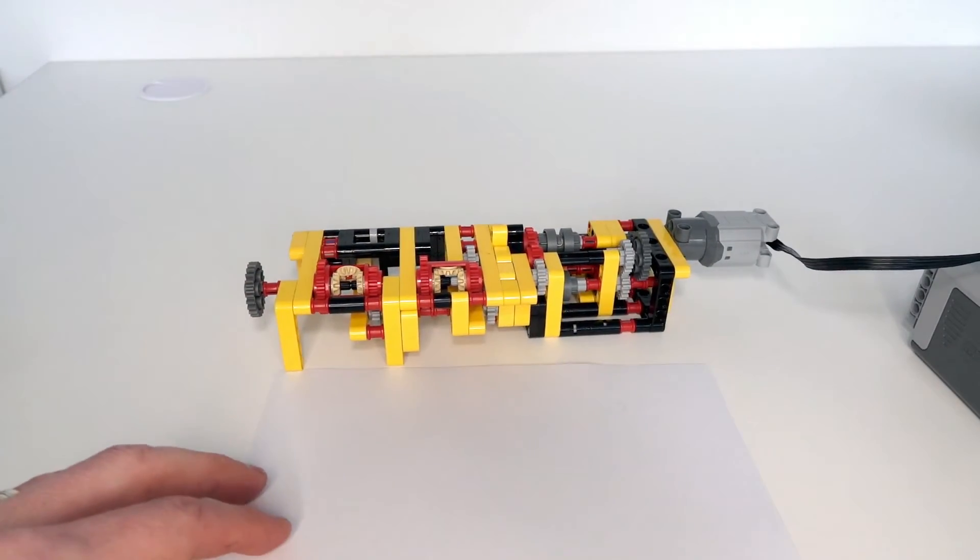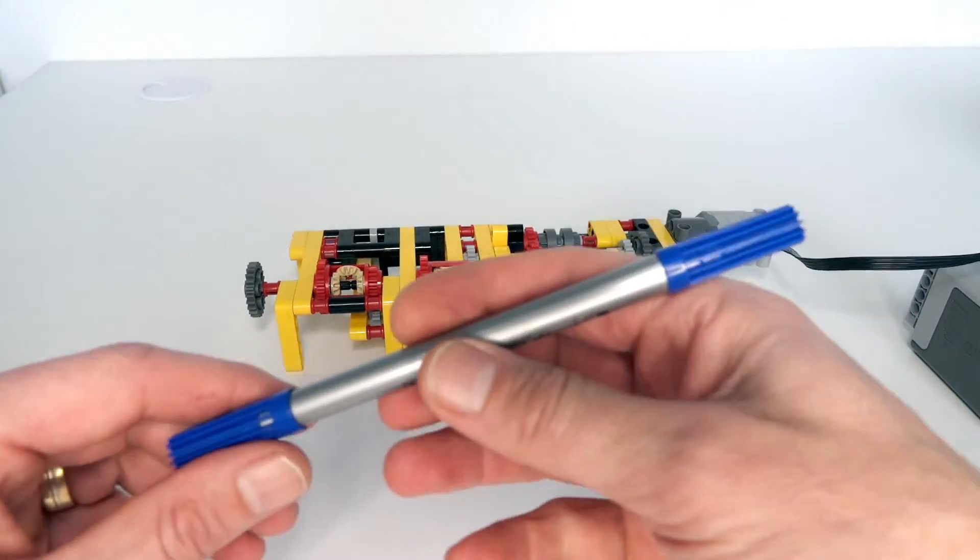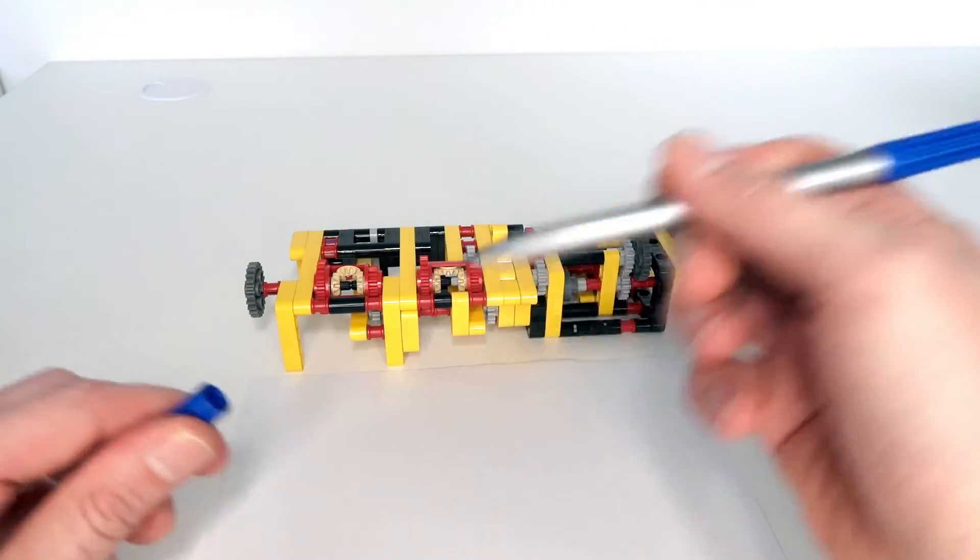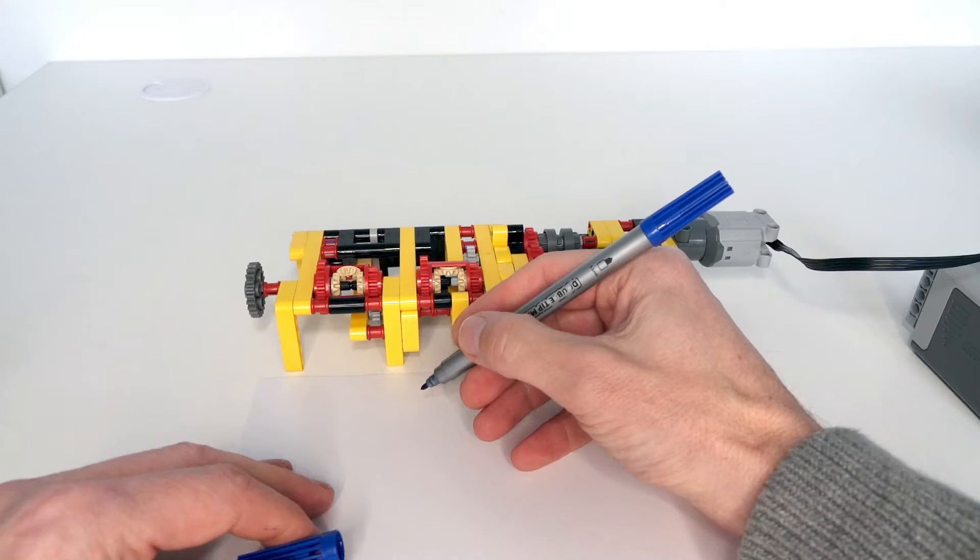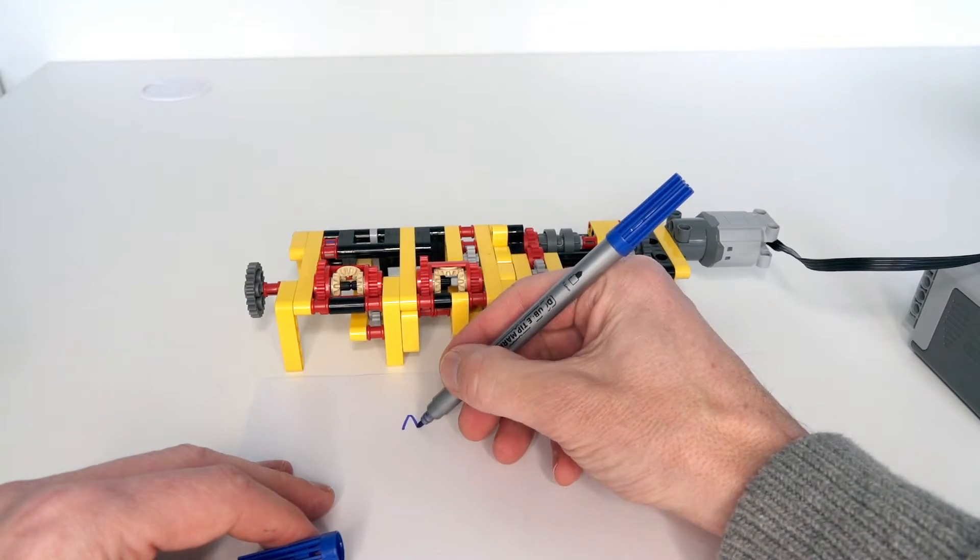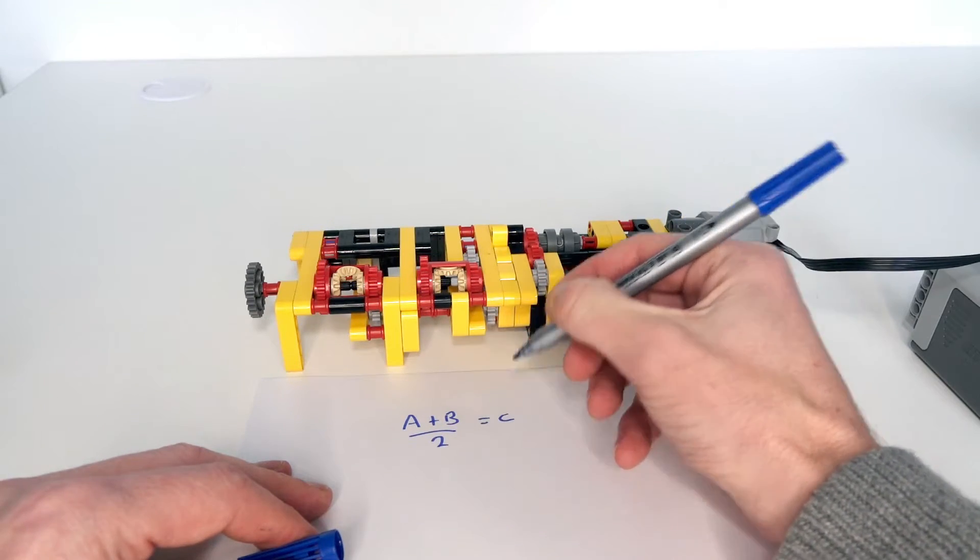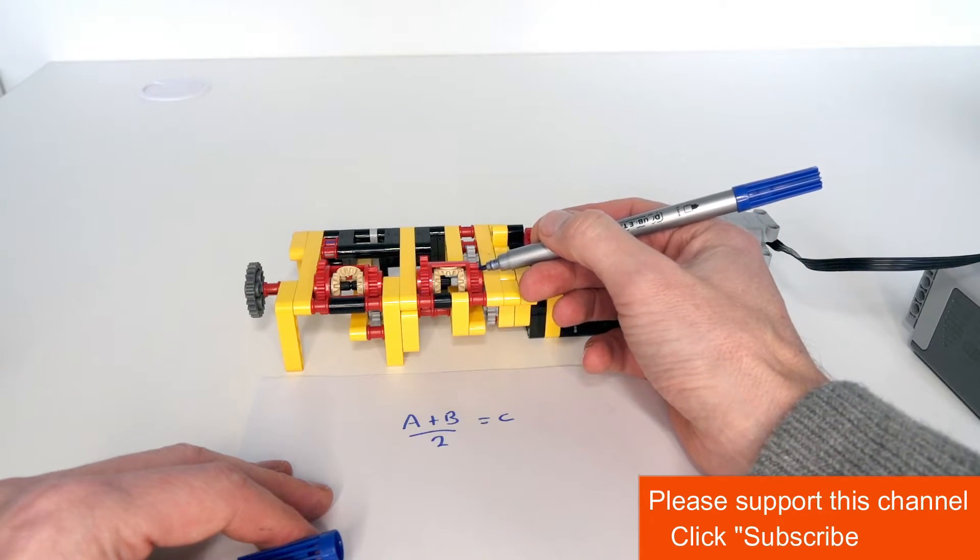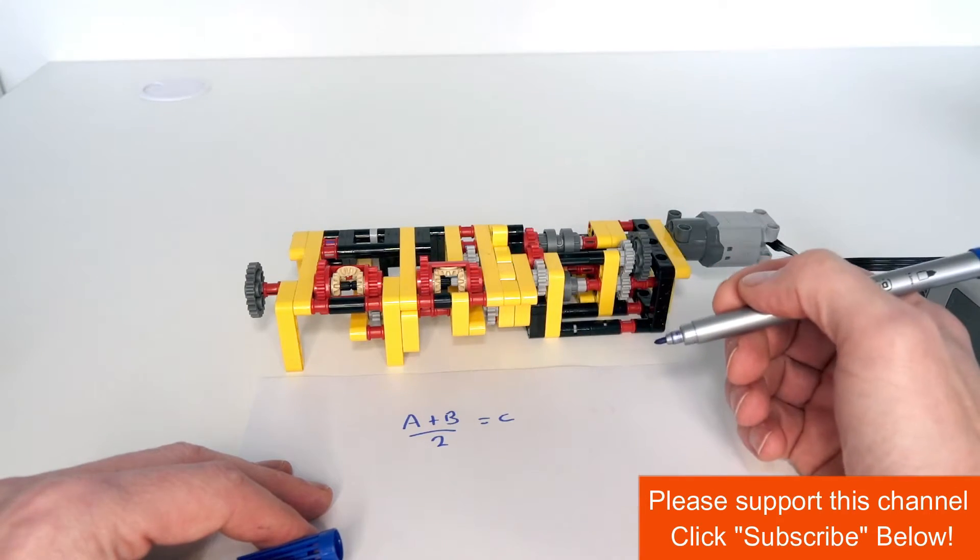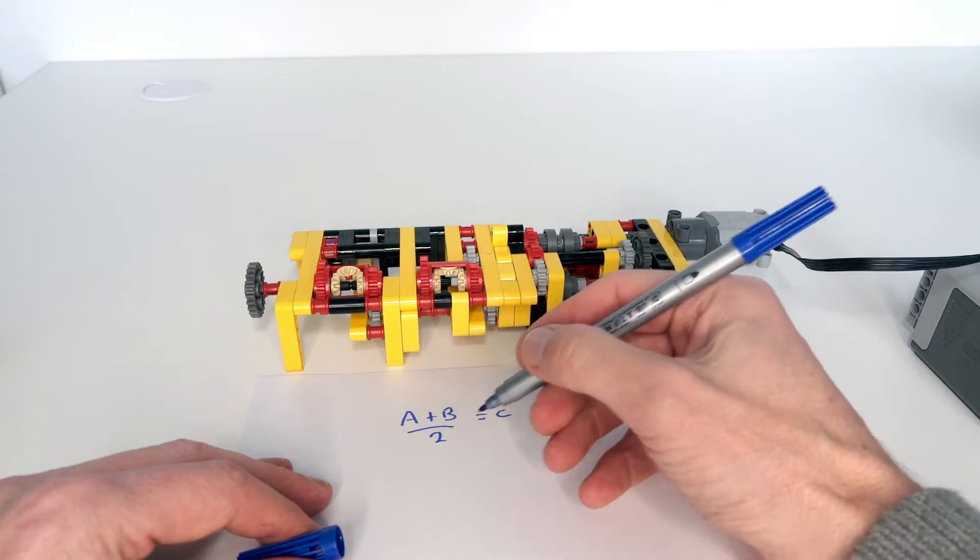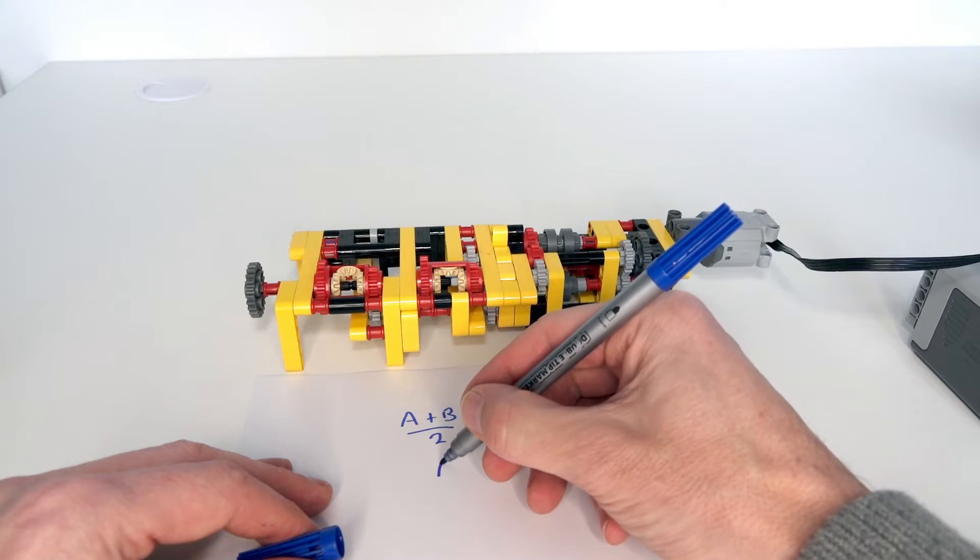The method I've used to get the reversing with the differential: if you remember the differential equation, what we have is that (a + b) / 2 equals c, where c is that center part of the differential, and a and b are the two inputs. And what I realized, if I rearrange this equation, we can write, for example, that a equals 2c minus b.